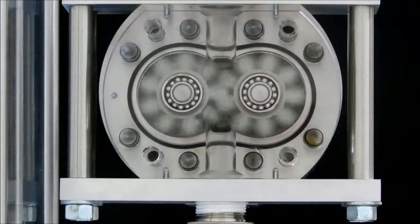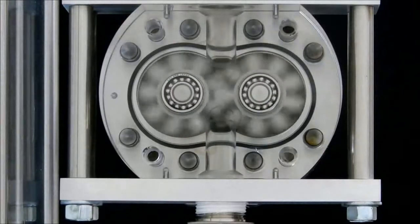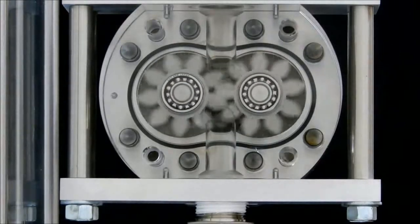Positive displacement flow meters divide a flow stream into fixed, known volumes and count them to determine the total flow and flow rate.